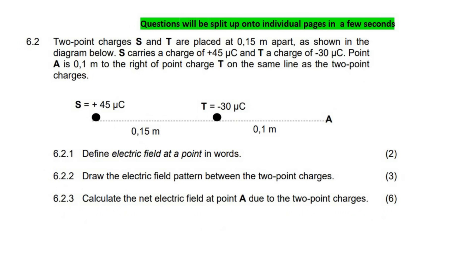So this question will be split up onto different pages, but here we're just going to look at it. Two point charges S and T are placed a certain distance apart as shown in the diagram. S has a charge, T has a charge, point A is to the right. Everything that is mentioned here is already on the diagram.